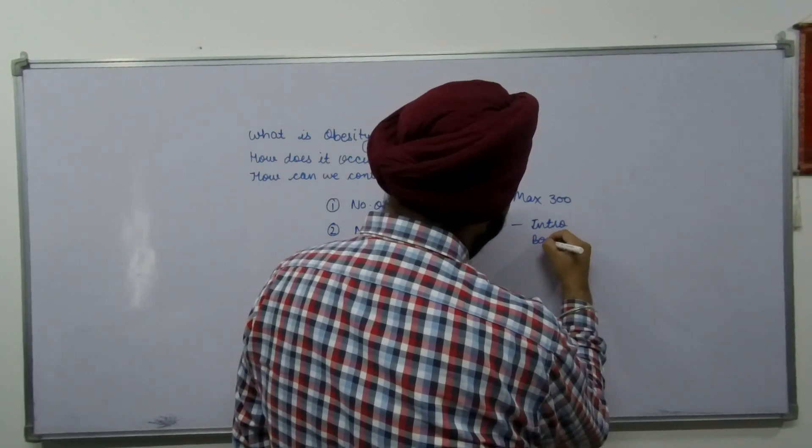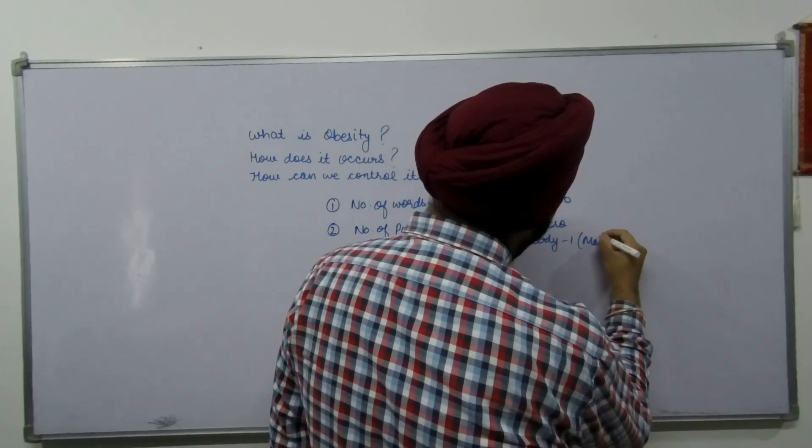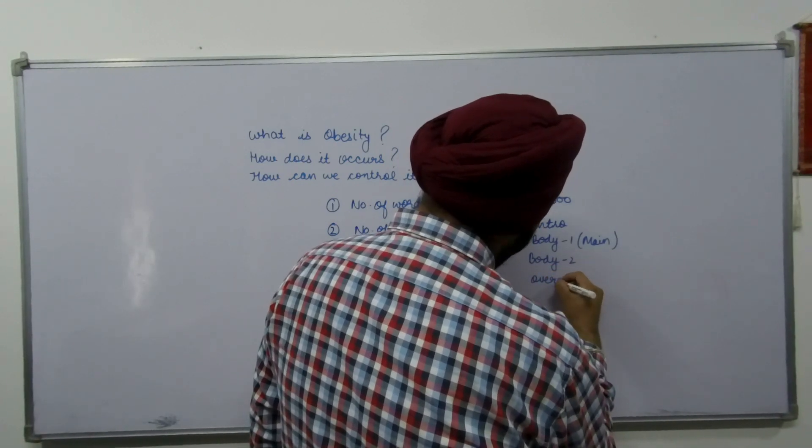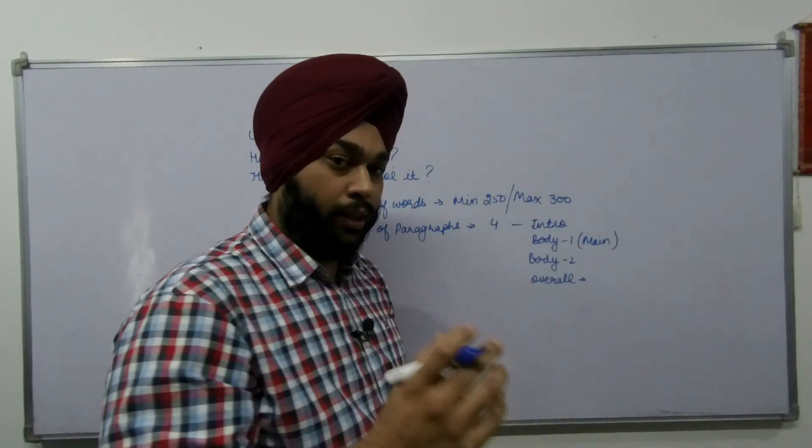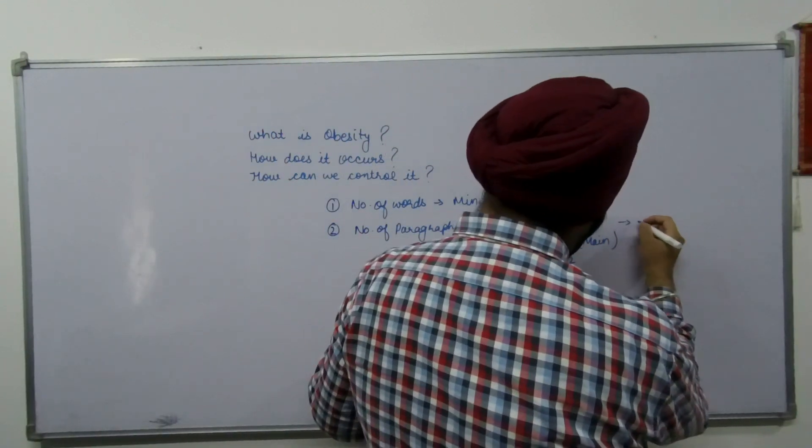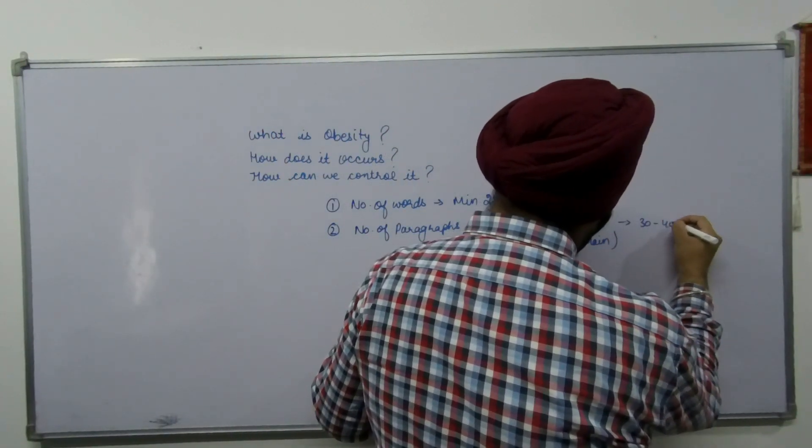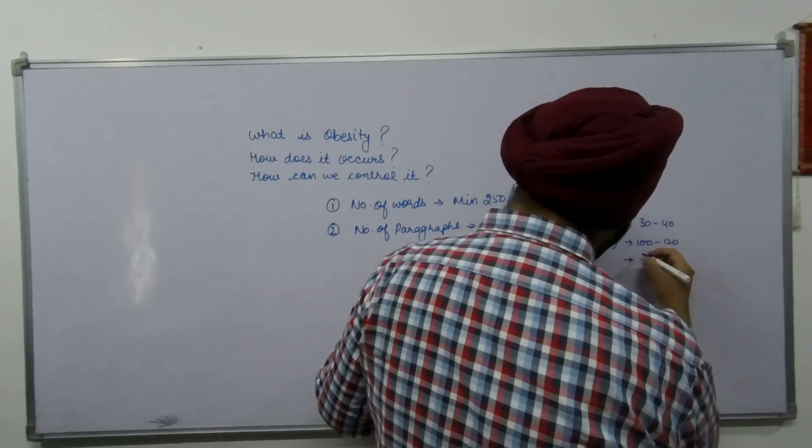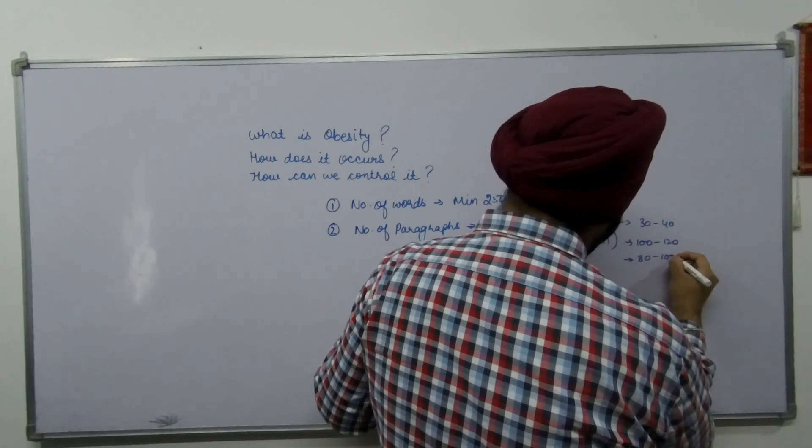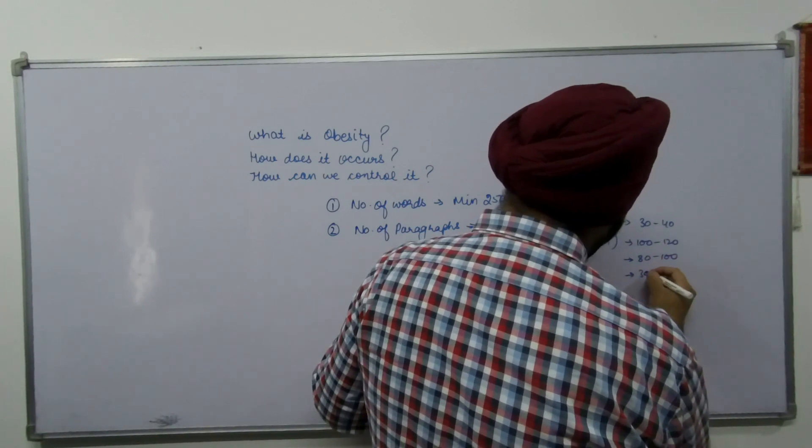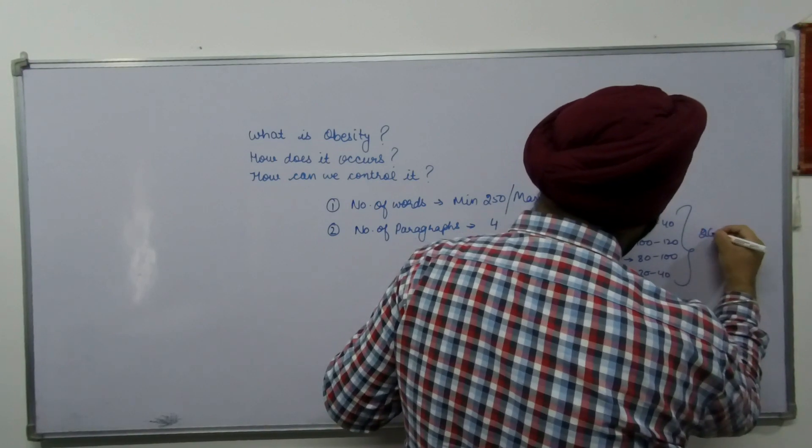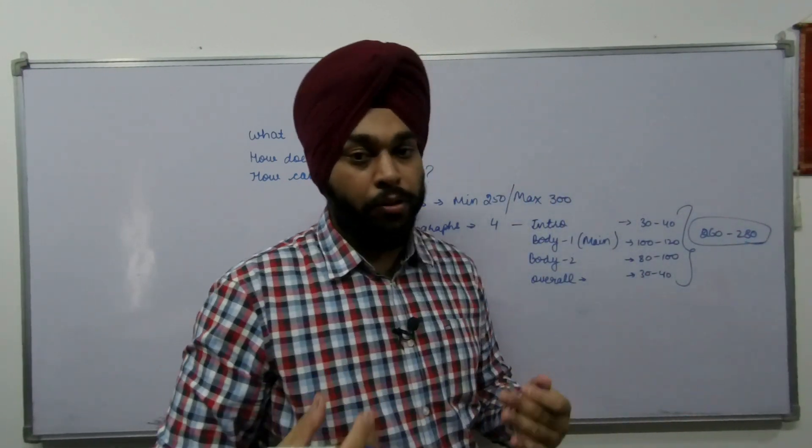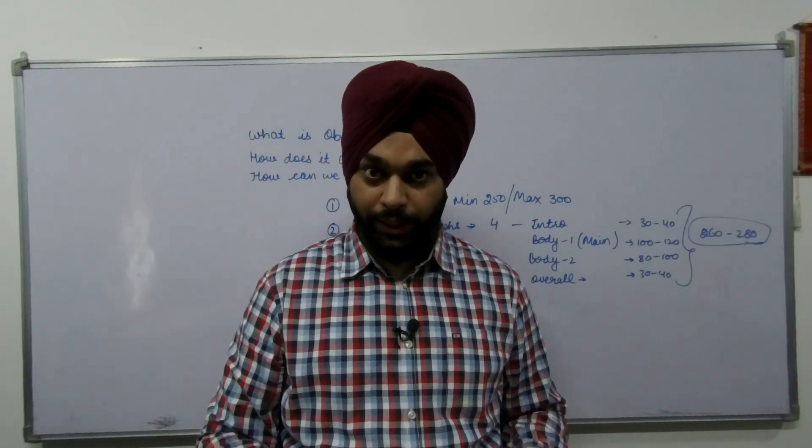You must always make four paragraphs. The first one is always the introduction. Second one is body one or the main paragraph. Third one is body two, and the last one is the overall or conclusion. In introduction it is suggested that you mustn't write more than 30-40 words, 100-120 words for the main body para one, for body para two it should be around 80-100, and for the overall again 30-40. So if you take an average, it will be around 260-280, which is according to me the perfect limit for an IELTS essay.